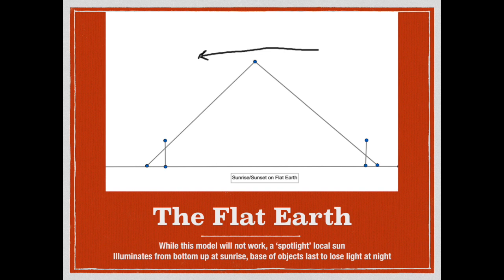Likewise, for our sunset at Mount Everest, we would expect the darkness to hit the top of the mountain first and the base to have light the longest — yet it was just the opposite. The base became dark long before the top did. One thing raised by a Flat Earth scientist was refraction. With the Sun high in the sky forming a spotlight, refraction would tend to bend the light toward the center and tighten the spotlight beam, making the light slightly more vertical by a degree or two — so that won't really help shoehorn this into a Flat Earth model.